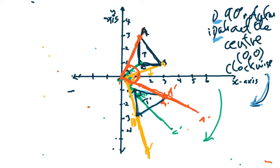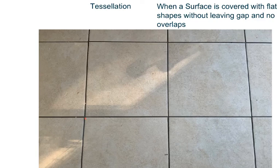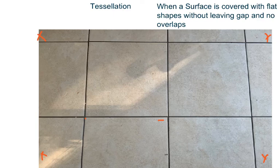Next we are going to look at tessellation. To tessellate really means to tile. A tessellation is when a surface is covered with flat shapes without leaving a gap and without overlapping. This is a tessellation — these are tiles in my house. The tiles were tessellated: this surface was covered with tiles that are exactly the same, covering the distance without leaving any gaps between them.